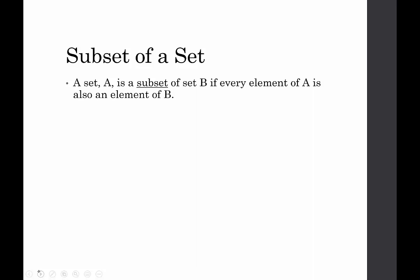Okay, so we say a set A is a subset of set B if every element of A is also an element of B. So for example, if set A consists of the elements 1 and 2, and set B consists of the elements 0, 1, 2, and 3, we would say that A is a subset of set B because I can find both elements of set A within set B.